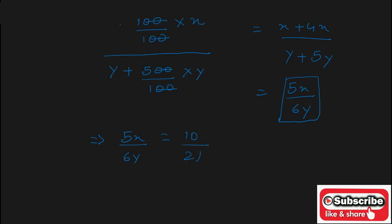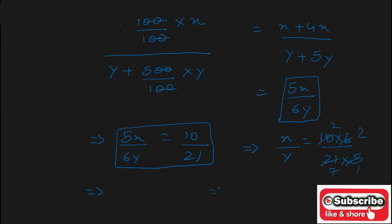Now we have to find the value of x upon y. Cross multiplying the terms of LHS with the terms of RHS, we get x upon y equals 10 into 6 upon 21 into 5, which simplifies to 4 upon 7.